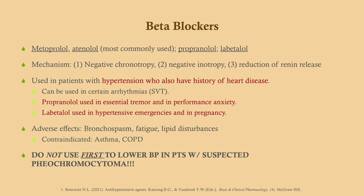Beta blockers — this includes metoprolol and atenolol, which are probably the most commonly used for hypertension. We also have propranolol and labetalol. The mechanism: there are actually several mechanisms by which these beta blockers work, and that makes sense because beta receptors are all over the body. Number one and two, they have negative chronotropic and negative inotropic effects, meaning ejection fraction goes down and the heart slows — together that reduces cardiac output. Number three, they reduce renin release, giving some similarity to RAS agents, though you can absolutely use both together if needed.